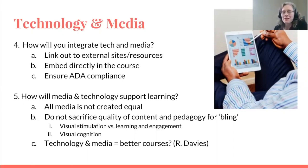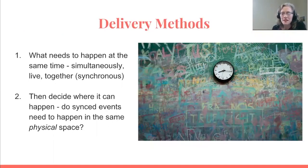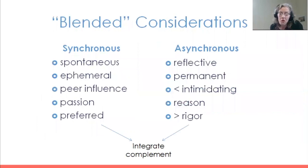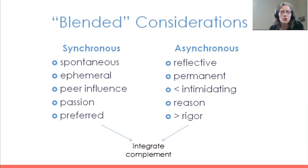Let's shift and think about delivery methods. As you think about your course, what elements need to happen at the same time, simultaneously, in a live group? Those are synchronous events — identify those, and then decide where those synced events need to happen. Do they have to happen in the same physical space, or could they happen outside of that? If some elements need to happen at the same time in the same physical space, you're headed into the world of blended learning — some elements online, some face to face.